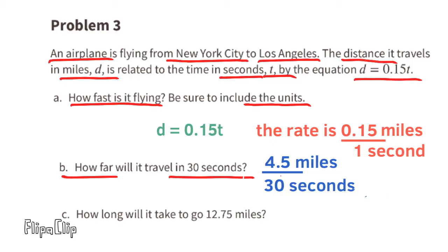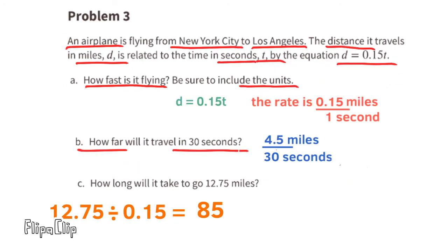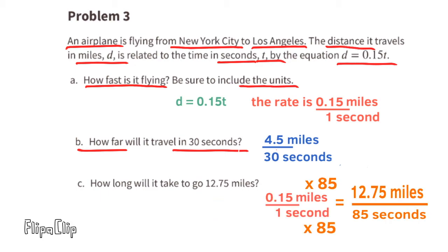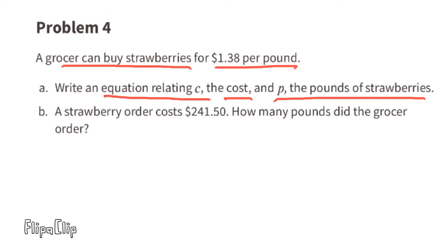Part c asks how long it will take to go 12.75 miles. We know the plane is flying at a rate of 0.15 miles per second, so we divide 12.75 by 0.15, which gives us 85 seconds. The plane will take 85 seconds to travel 12.75 miles.